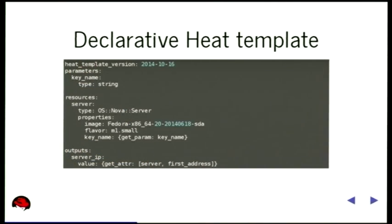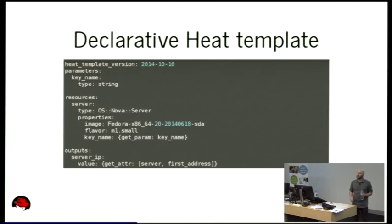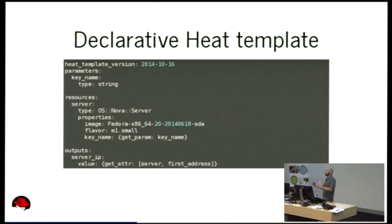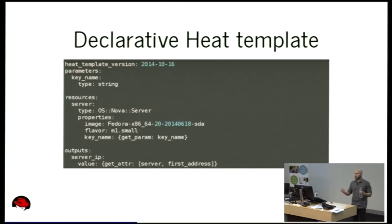This is the simplest Heat template I could fit into a single slide. It's got three sections: a definition of parameters, which are the things you pass into Heat when you launch a stack; a list of resources, where each resource roughly maps to an API that creates a thing; and a collection of outputs where you can build data for the user after the stack has been launched. Here we've got just a simple server running with a key that allows SSH access.